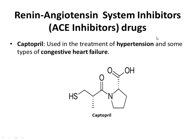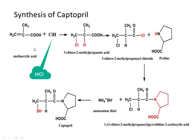Captopril is an ACE inhibitor drug used in the treatment of hypertension and some types of congestive heart failure. Synthesis of Captopril: starting from methacrylic acid, it reacts with HCl to give 3-chloro-2-methylpropionic acid, which further gives 3-chloro-2-methylpropionyl chloride by eliminating one water molecule. This compound reacts with proline, eliminating HCl, to give an intermediate. This compound further reacts with ammonium thiol to give Captopril, with elimination of ammonium chloride.